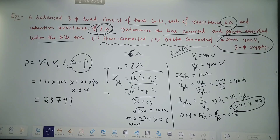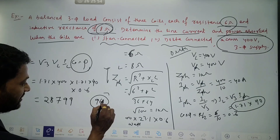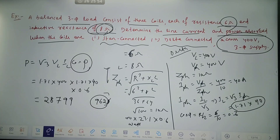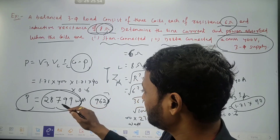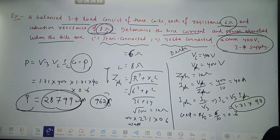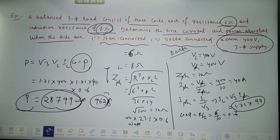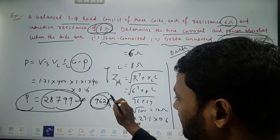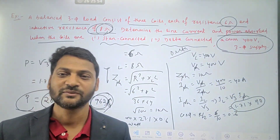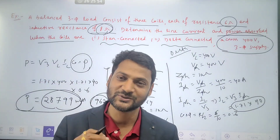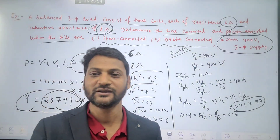So initially in the star connected circuit the power was approximately 9,625 watts, and in the delta connected circuit it is about 28,799 watts — almost three times. With this I am ending this lecture. Thank you so much for watching my video. If you like my video, please do subscribe to my channel and share with your friends. Once again, thank you, and all the best for your exam.